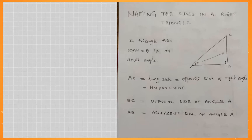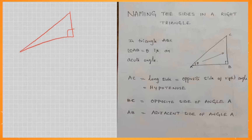First, what is the right triangle? In any triangle, if one of the angles is 90 degrees, then that triangle is called a right triangle.